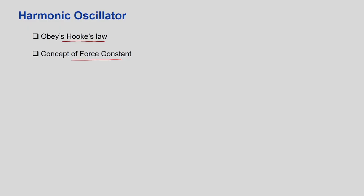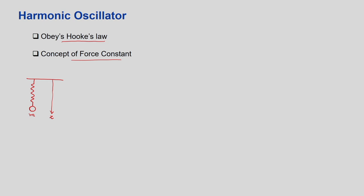The diatomic molecule is assumed to be two particles connected through a bond. Consider a single body particle problem. Suppose we have a mass m, with distance measured along direction z. At rest, the distance from the top to the mass is some constant value z0. If you either stretch or compress it, it will not be in its equilibrium position and will have some displacement. The sign convention: displacement is written as z minus L0, where L0 is the rest distance.